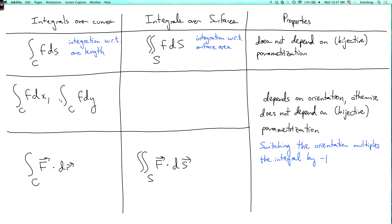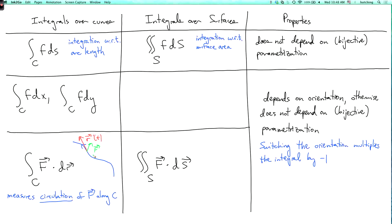You can put these together to get the integral of a vector field along a curve. This measures the circulation of f along c. If your curve is over here, at each point you're taking a tangent vector to the curve — this is r prime of t — and you're taking the dot product of that with f. So you're measuring the extent to which f is pointing in the same direction as the tangent vector to the curve.